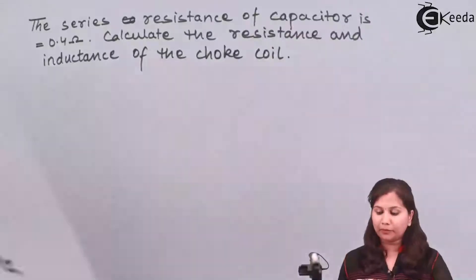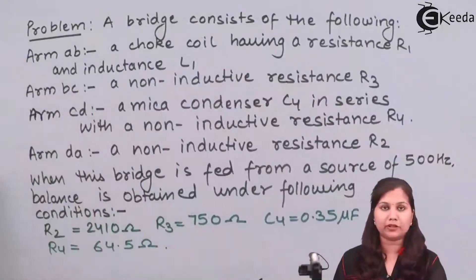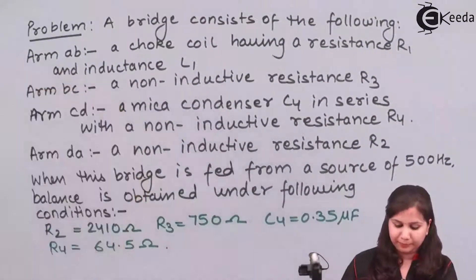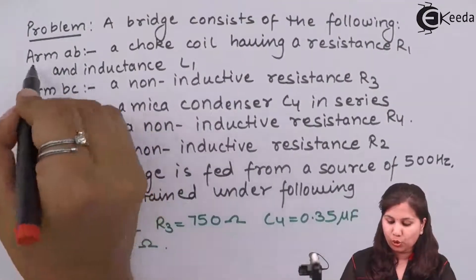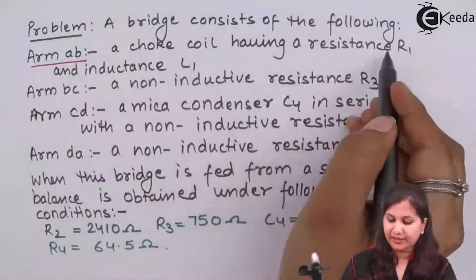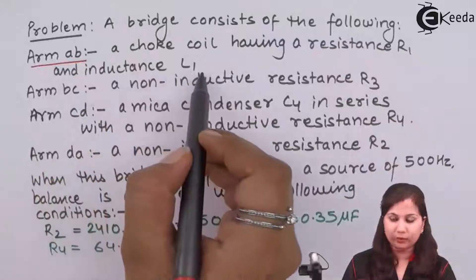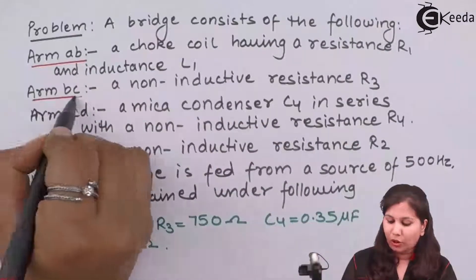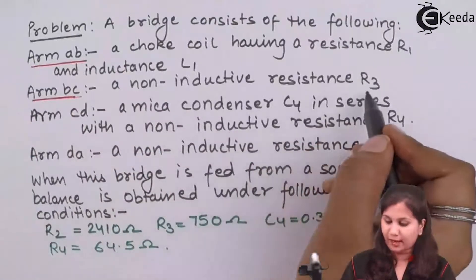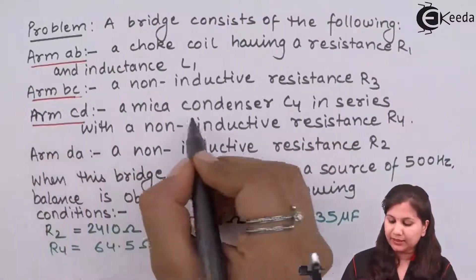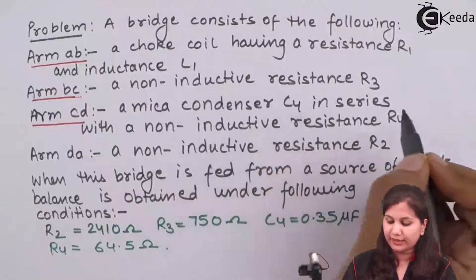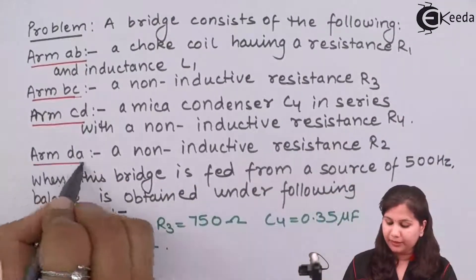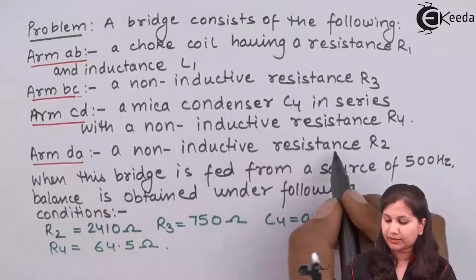Our problem is we are given a bridge which consists of the following four arms. Arm AB is a choke coil having a resistance R1 and inductance L1. Arm BC is a non-inductive resistance R3. Arm CD is a mica condenser C4 in series with a non-inductive resistance R4. Arm DA is a non-inductive resistance R2.